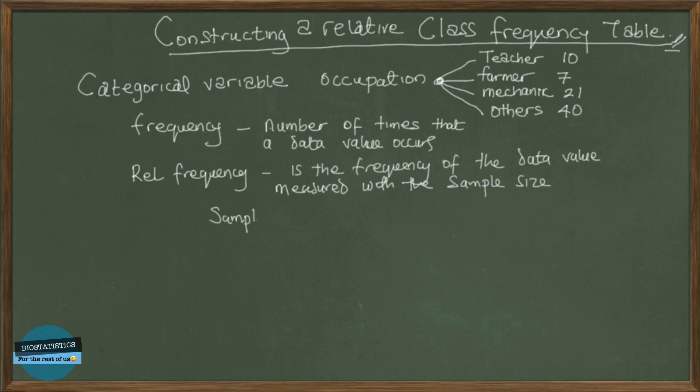So the sample size is just the total of all of this. So we add 10 plus 7 plus 21 plus 40 and we have 78.